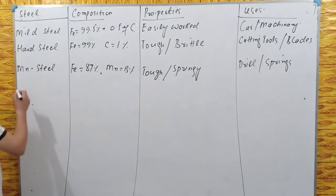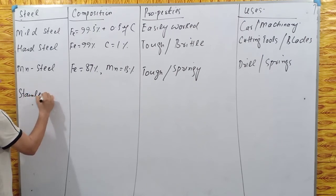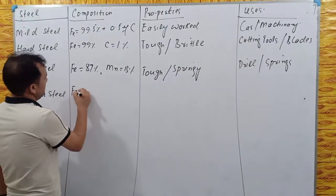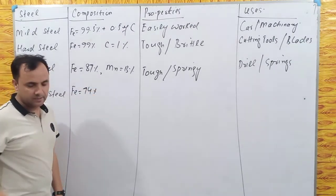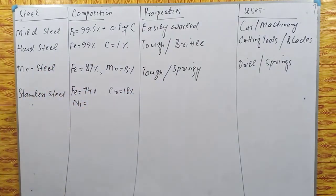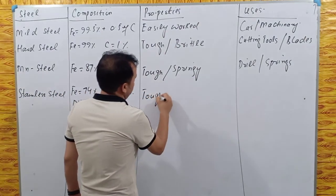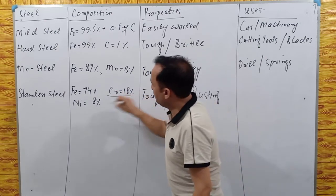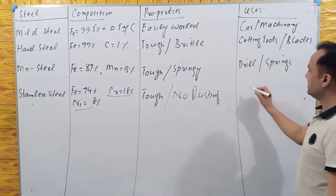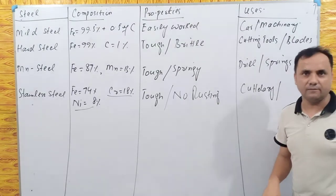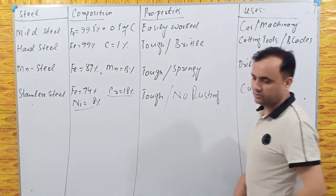Each steel has its own uses depending on composition. The next very common type is stainless steel. Many components at home consist of stainless steel. Its composition is approximately 74% iron, 18% chromium, and some nickel — three metals are mixed together. The main property of stainless steel is that there is no rusting, because of the chromium and nickel.